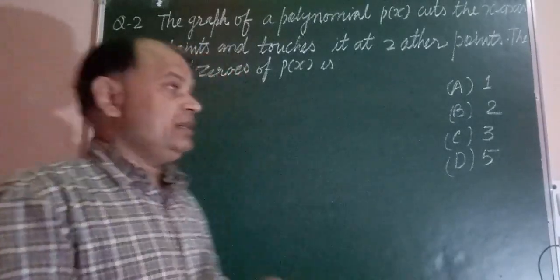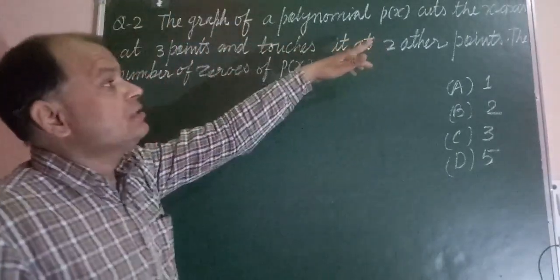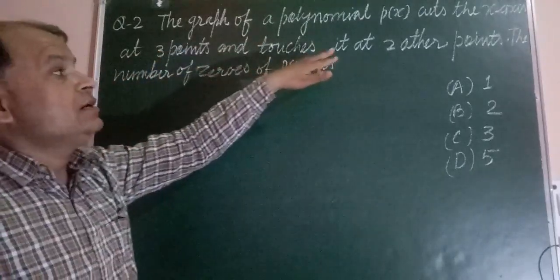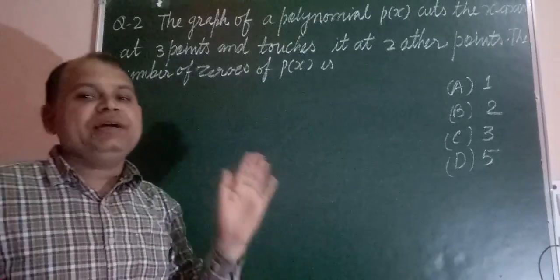Here is a question from Polynomial. The question is saying that the graph of polynomial P(x) cuts the x-axis at 3 points and touches it at 2 other points. What is the number of zeroes of P(x)?